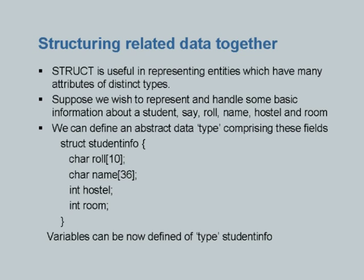You could have one array of roll numbers, another array of hostel numbers, a third array of room numbers — but the array of room numbers seen outside the context of the associated roll number will not give you any information. The ideal thing would be if you can stipulate a single record for a student, just like one page per student in the academic office, which records name, roll number, hostel number, room number, address, and so on.